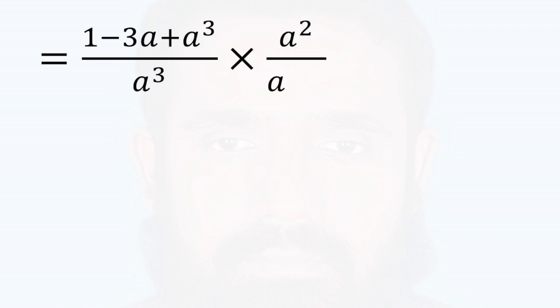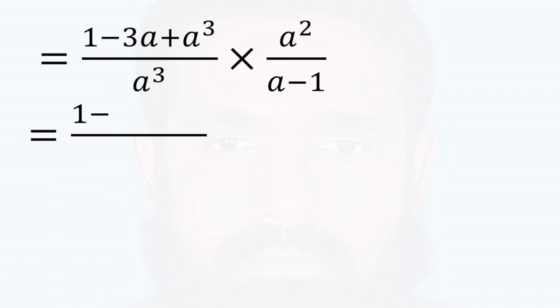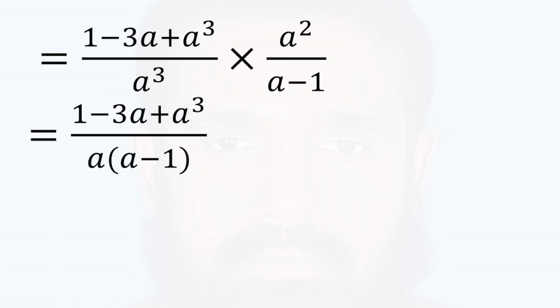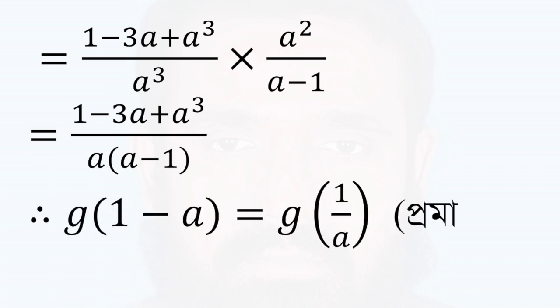1 minus 3a plus a cubed by a cubed. And this is the number of a squared by a minus 1. So we will get a squared by a minus 1. So what happens to a squared by a minus 1? We have to make 1 minus 3a plus a cubed by a into a minus 1. This we will get a squared by a minus 1, which is a squared by a squared by a minus 1.